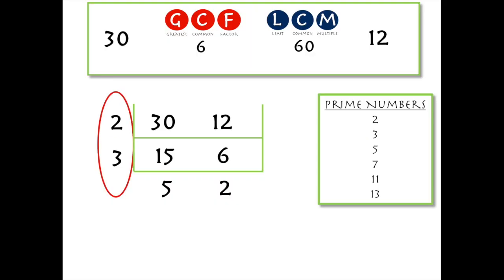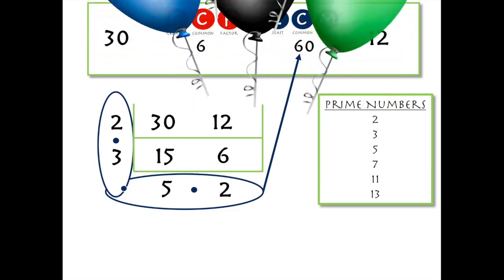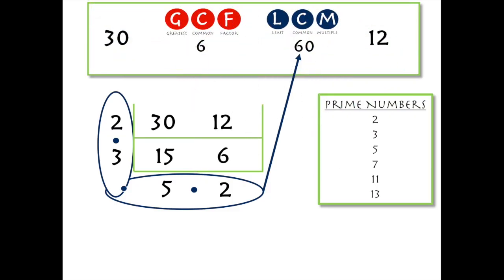Here comes the cool part. Looking at just the left side, if we multiply those numbers together — two times three — we get six, the greatest common factor. And if we multiply all of the outer numbers together — two times three is six, times five is thirty, times two is sixty — that's the least common multiple. We found them both at the same time!